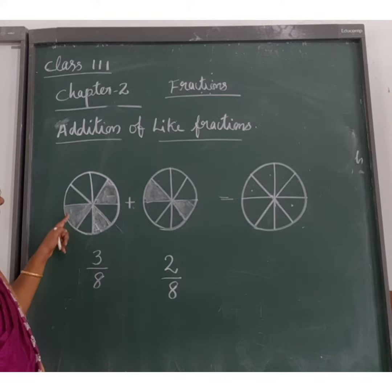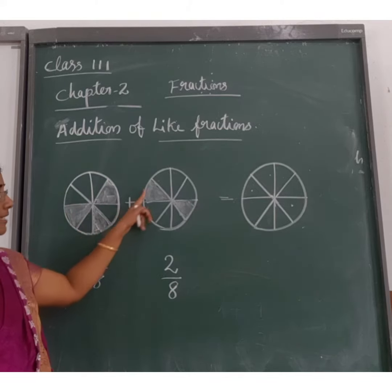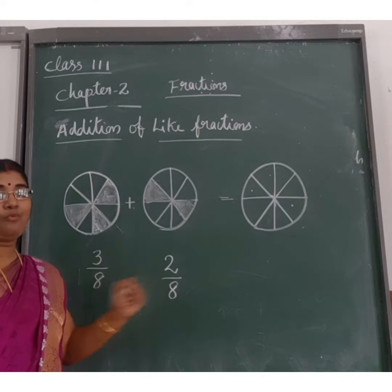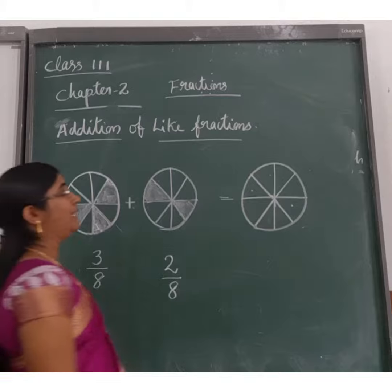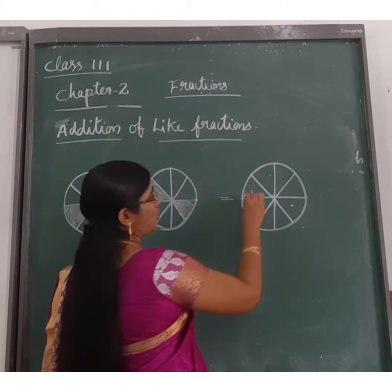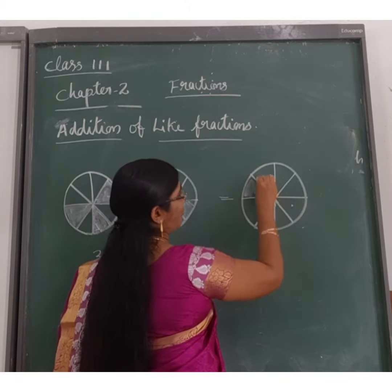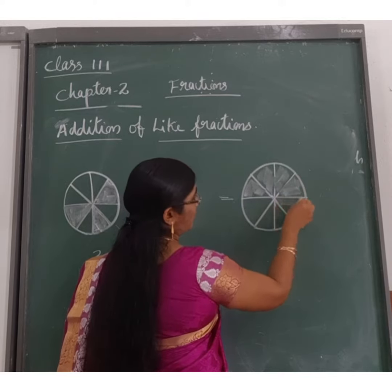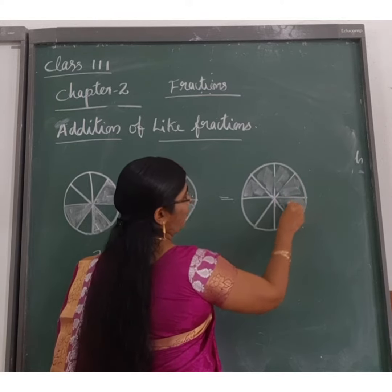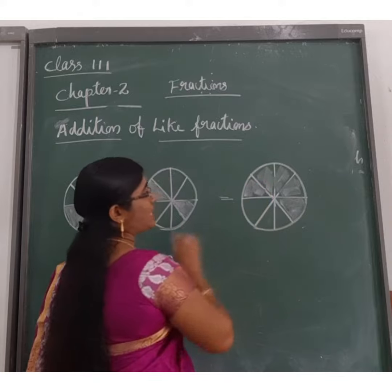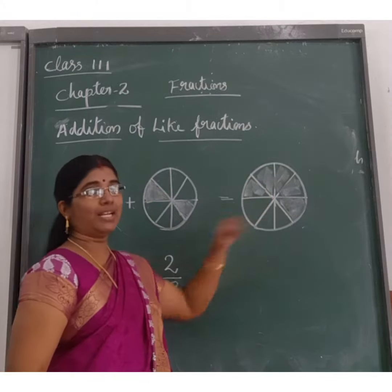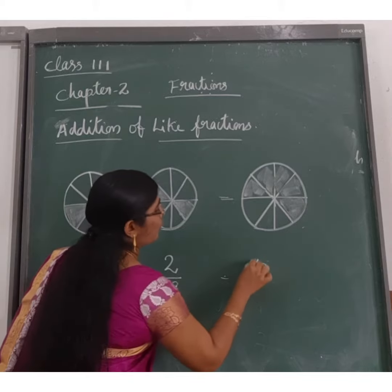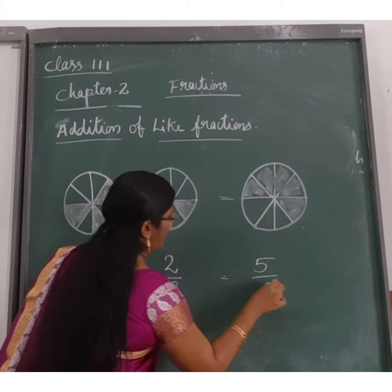So if we add these 3 and these 2, we will get 3 plus 2 is 5 equal parts. Then we have to shade these 5 parts — 3, 4, and then 5. So the total number of parts is 8, and 5 parts are shaded. So the fraction is 5 by 8.